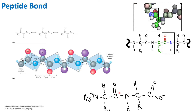We have our first amino acid with its R group and our second amino acid with its R group. This carbon used to be a carboxyl — it lost its oxygen — and this nitrogen used to be the amino terminal and lost two of its hydrogens. So we've lost a water molecule, meaning water is released, and whenever we see peptide bond formation we know it is a condensation reaction.